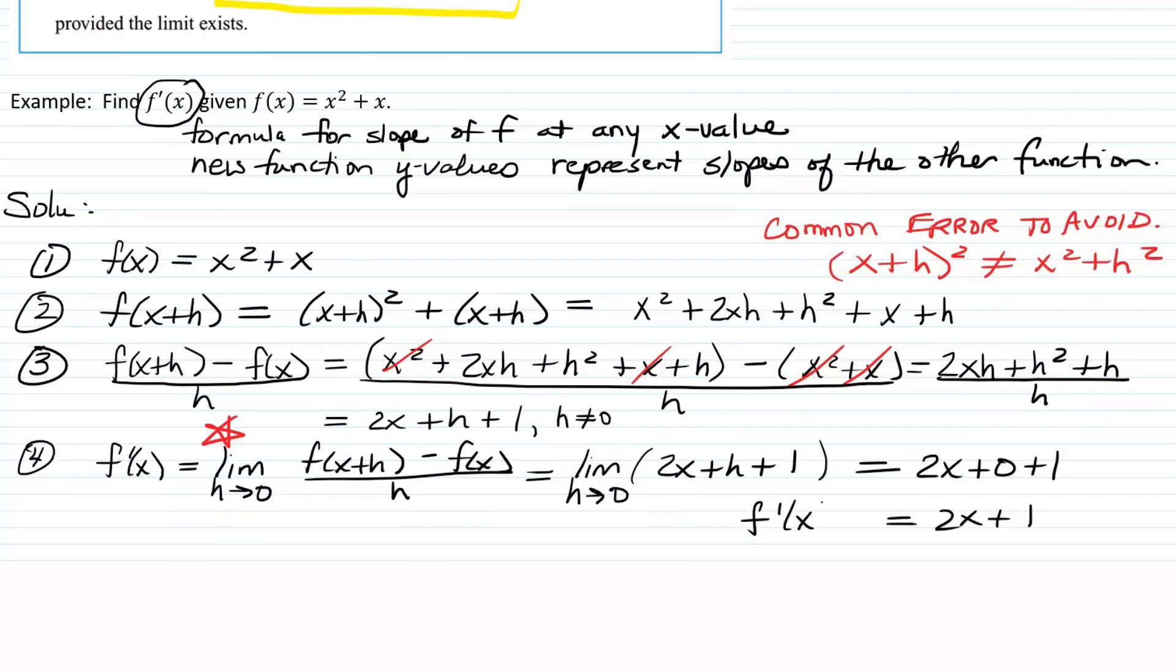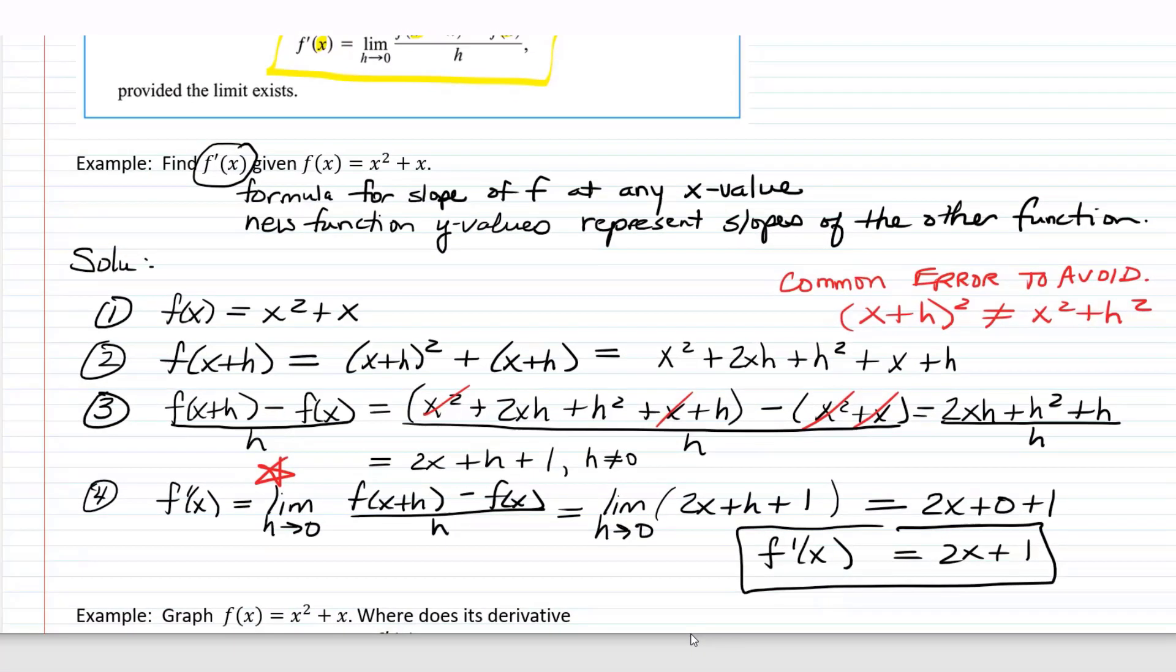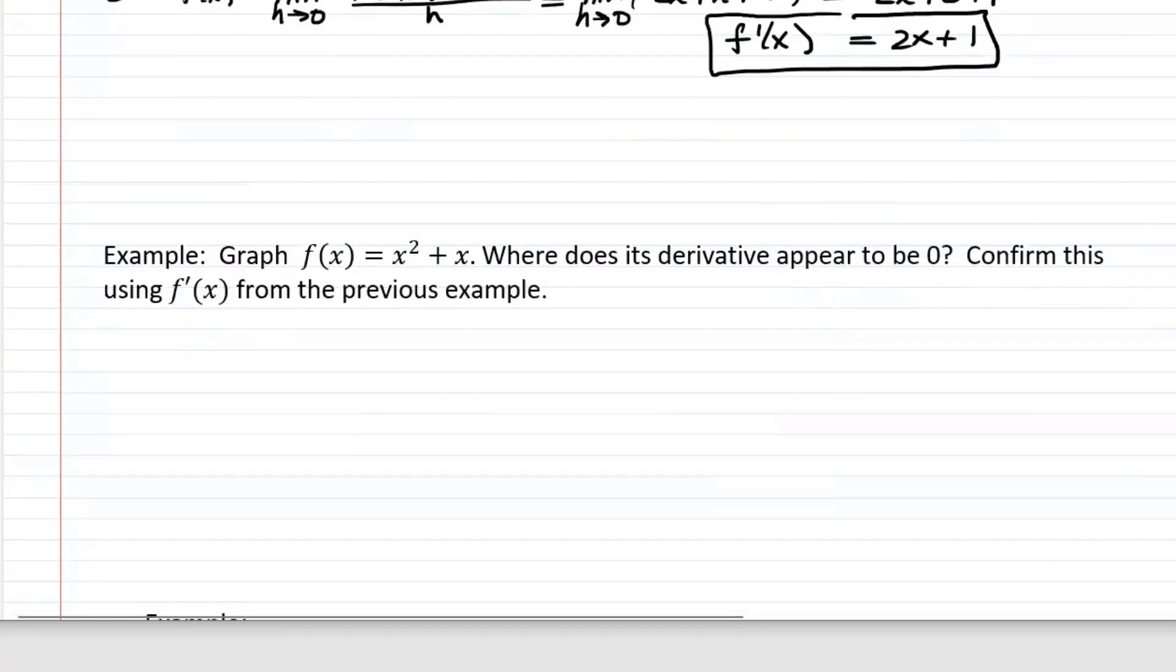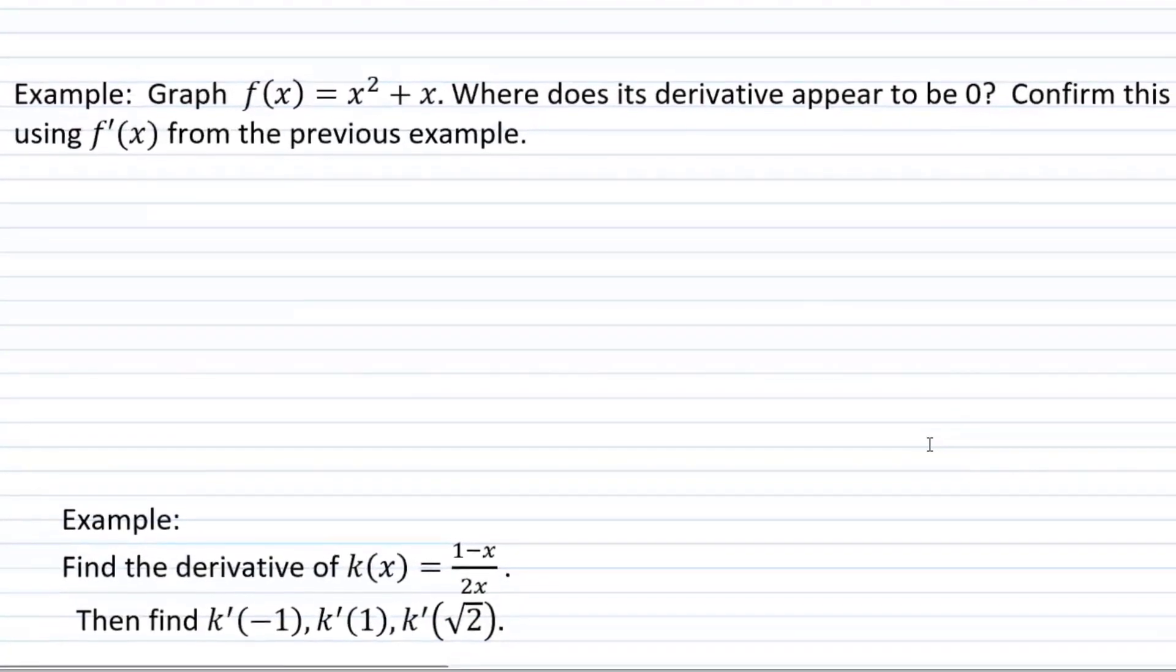So it's just going to be 2x plus zero plus 1 or 2x plus 1. So we just found that f prime of x is equal to 2x plus 1. This is a formula for the slope of f at any particular x value. So now it says in this next example, graph f of x equals x squared plus x, where does its derivative appear to be zero? Confirm this using f prime of x from the previous example.